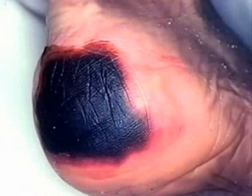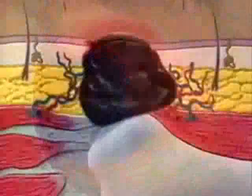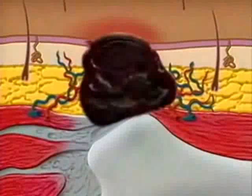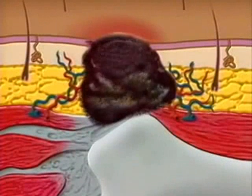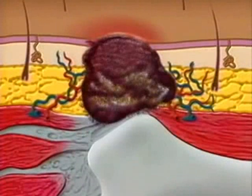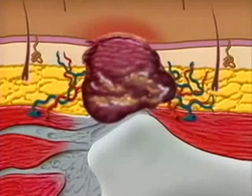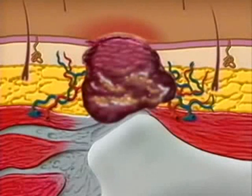An eschar-covered pressure ulcer can interfere with accurate staging. According to the AHCPR guidelines, when eschar or necrotic tissue covers a pressure ulcer, it must be removed before the ulcer is staged, because tissue removal allows you to view the ulcer base and the full extent of tissue destruction.